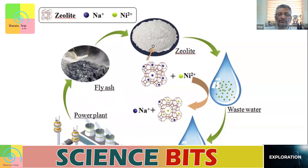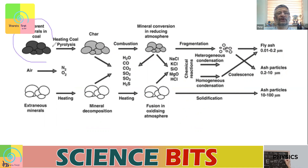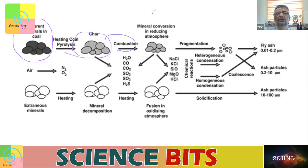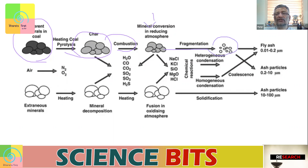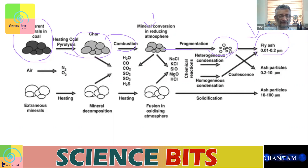Fly ash essentially comes from power plants. It all depends on the size — if you have coal, it can become char. When you combust this char in a reducing atmosphere, it can break into fragments. If the fragments are less than 0.1 to 0.2 micrometers, that is fly ash. If it is bigger, we don't call it fly ash.